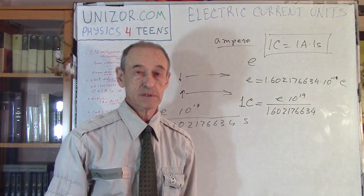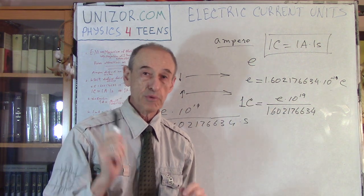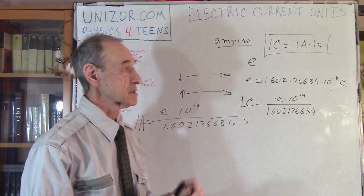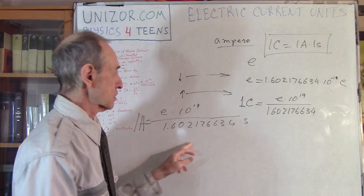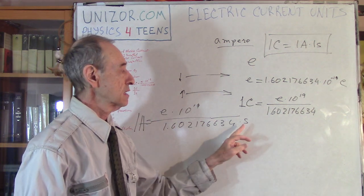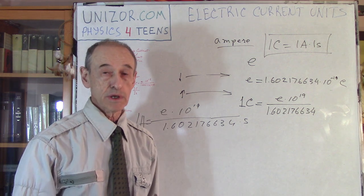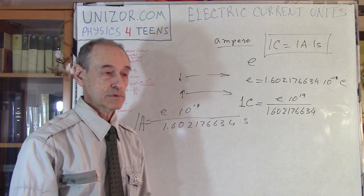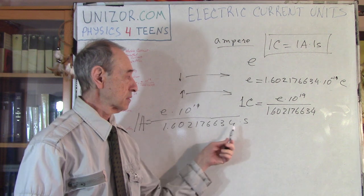Our primary unit, our base unit is ampere, and that's what it is. Amount of this electricity which is transferred through the current, through the conductor, in one second.